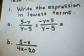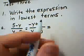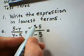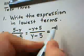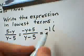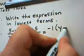Now, if I want to reduce this to lowest terms, what I'm going to do is I'm going to factor a negative 1 out of the numerator. When I factor out a negative 1, in parens that will leave me with y minus 5.